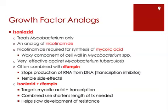Isoniazid is still quite effective against most strains of Mycobacterium tuberculosis. Because of increasing resistance in these organisms, it's often combined with another drug called rifampin. Rifampin works completely differently — it stops the production of RNA from DNA, which is the process of transcription. Rifampin interferes with transcription in bacteria. One of the issues with rifampin is that it has terrible side effects — this is not a drug you would want to take unless you absolutely had to.